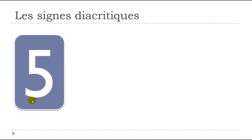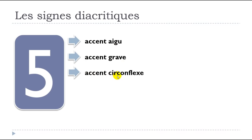The first one is accent aigu. The second one is accent grave. The third one is accent circonflexe. Then tréma. And last, but not least, cédille. So: accent aigu, accent grave, accent circonflexe, tréma, and then cédille.